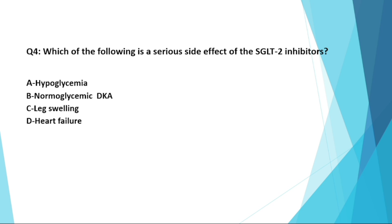The fourth question: which of the following is a serious side effect of SGLT2 inhibitors? Options are hypoglycemia, euglycemic DKA, leg swelling, or heart failure. The serious side effect of this drug group is euglycemic DKA.